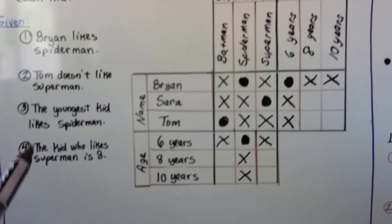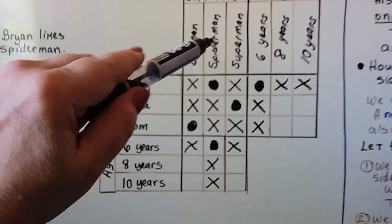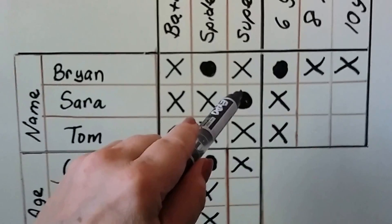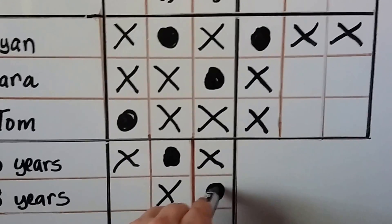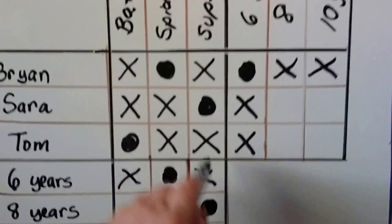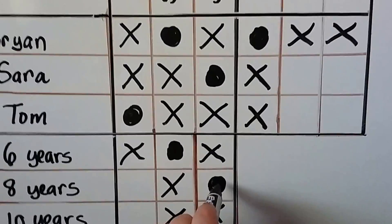Our last clue is the kid who likes Superman is eight. Here's Superman, it's telling us that's the eight-year-old, so that's a yes. Which means if Superman is the eight-year-old, it's not the ten-year-old, so we can put an X here.